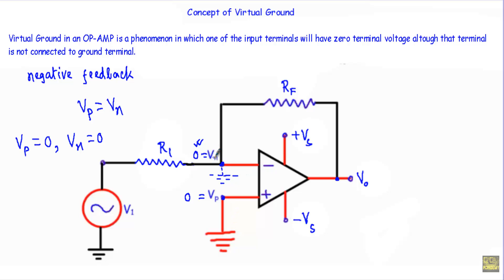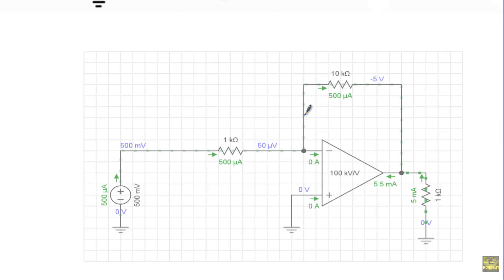Now let me show you a real life simulation. I have set up the circuit in a simulator. This is the circuit structure of an operational amplifier inverting amplifier. This is our output terminal, and this output terminal is connected to this inverting terminal.